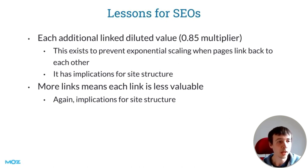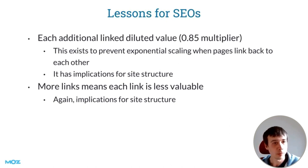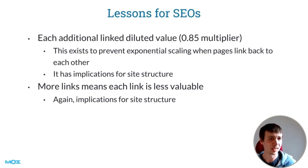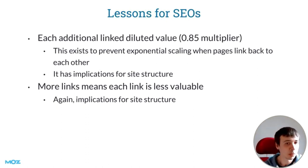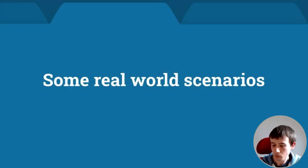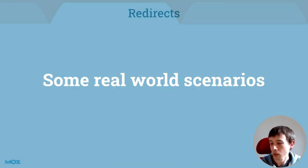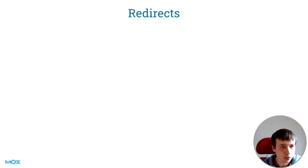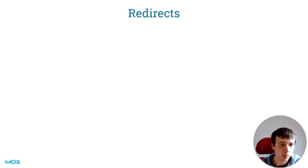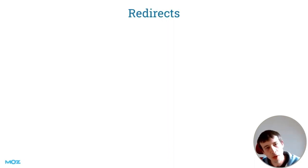If you change a home page so it goes from linking to 600 pages down to fewer than 100 that you actually want to rank, that will almost always have a massive impact — more so than external link building could ever dream of, because you're not going to get that 10x difference through external link building unless it's a startup or something.